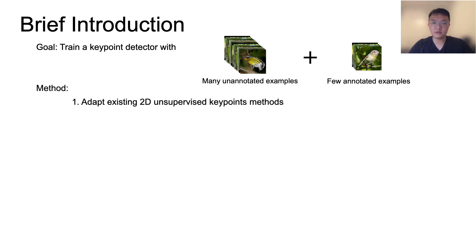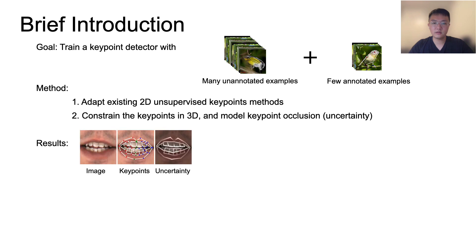We propose to adapt existing powerful 2D unsupervised keypoint detection methods to a few-shot setting. Furthermore, we constrain the keypoints in 3D by modeling keypoint occlusion. This allows us to detect keypoints that can hardly be detected by normal methods, such as teeth keypoints which are usually occluded by the lips. We can also obtain 3D keypoints with only few-shot 2D keypoint supervision.